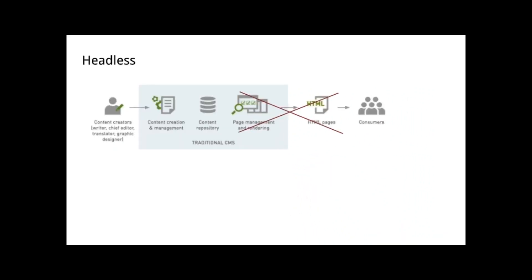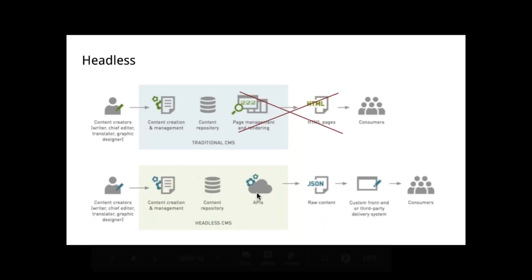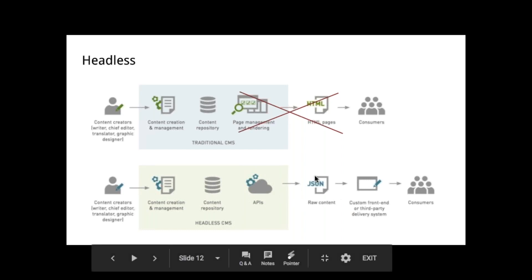But in a headless scenario, the CMS is still managing the content and still letting people put content in, but it's no longer delivering the actual HTML that people are seeing on their devices or in their systems. Headless looks very similar on the left side, but on the right side it's delivering to JSON and being used by other applications. So what are those other applications, and why is it useful for a company to go headless and just get JSON?